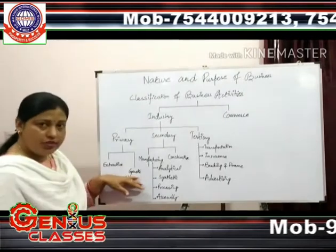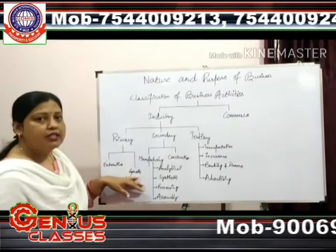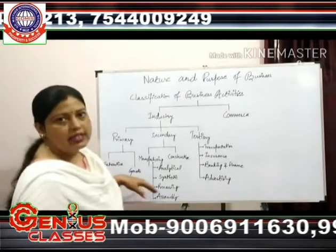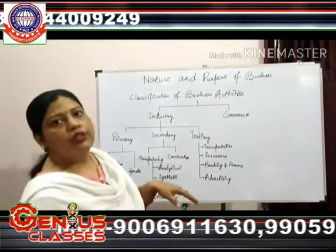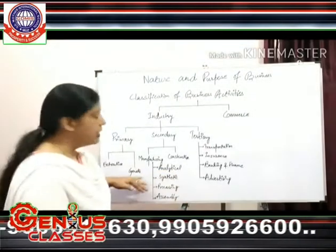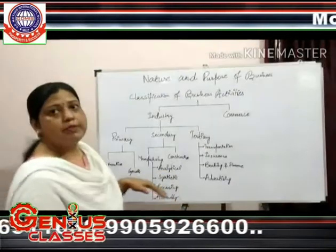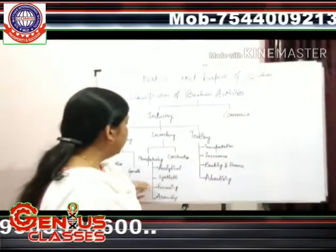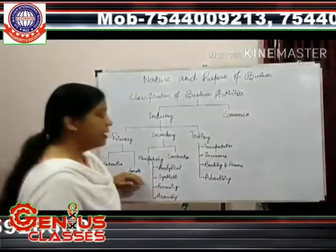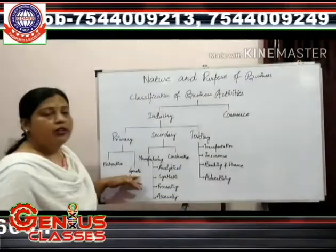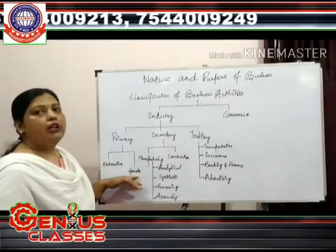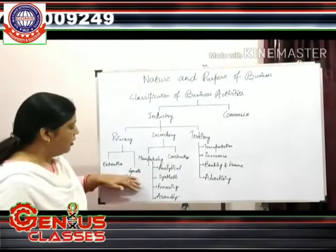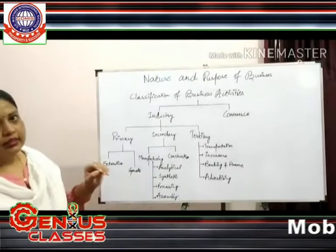In genetic industries, you can take examples of dairy products and poultry farms. Today, we also have the new concept of aquaculture. So in genetic industries, we are talking about rearing and breeding of species. This is our genetic industry.